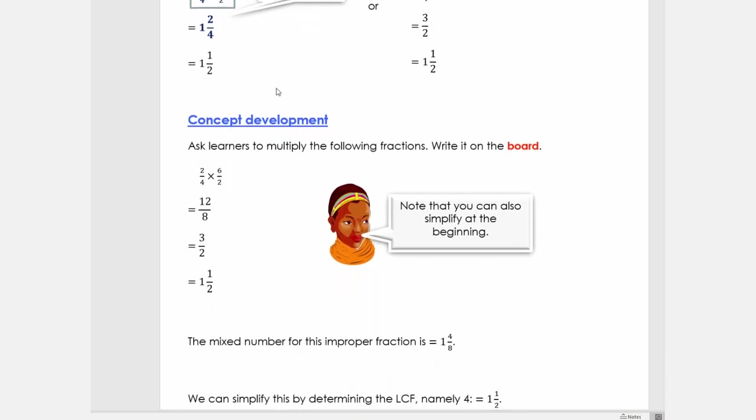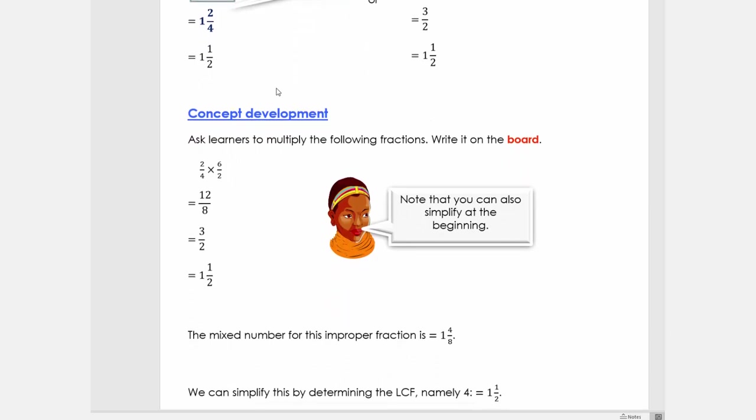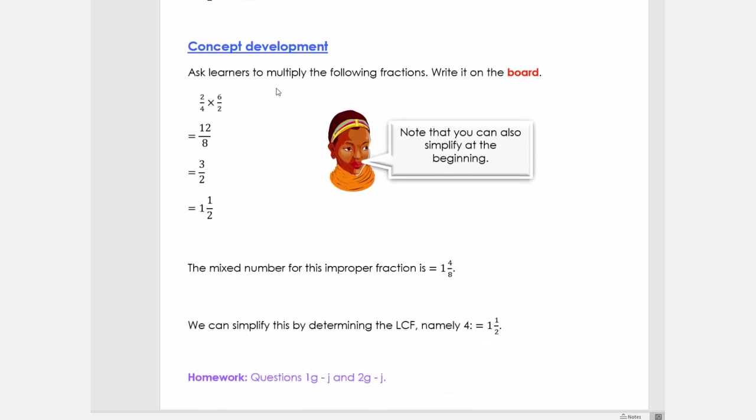So let's quickly look at the concept development. What we're going to do is multiply 2/4 by 6/2, so we multiply the denominators and then the numerators.